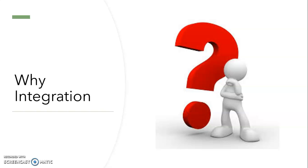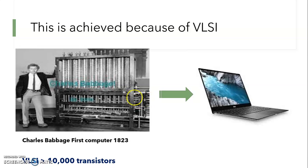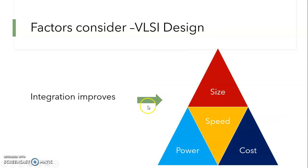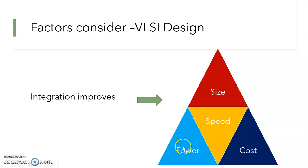Why do we need integration? This picture can easily explain. This is the size of the first computer developed by Charles Babbage in 1823, and this is the laptop we use nowadays. You can see this is possible due to integration. With integration, there is an improvement in size because more transistors are used in a small wafer, making it compact. Cost is also reducing, and it can also improve power efficiency and speed.